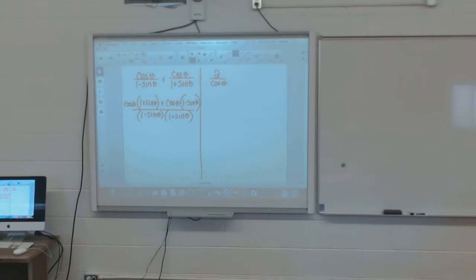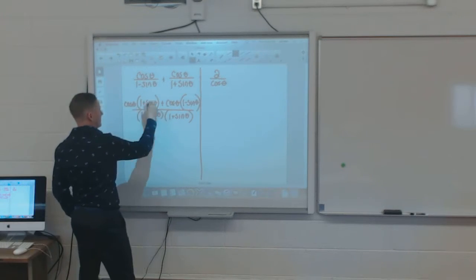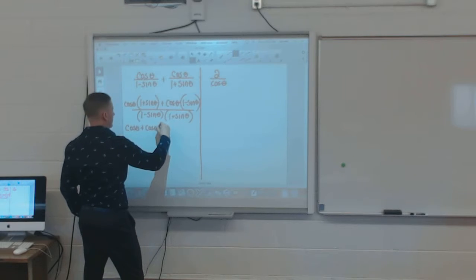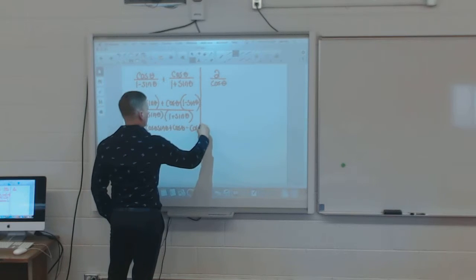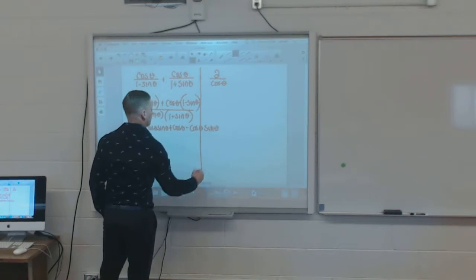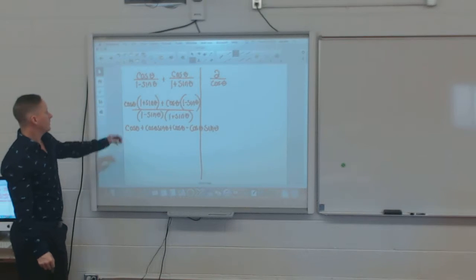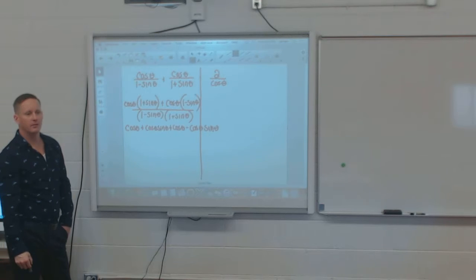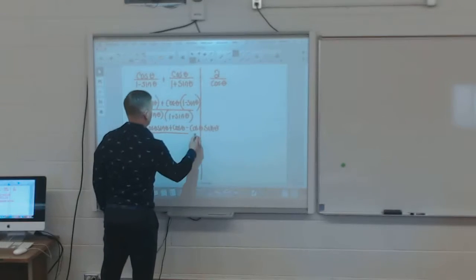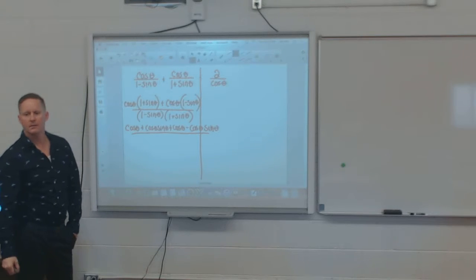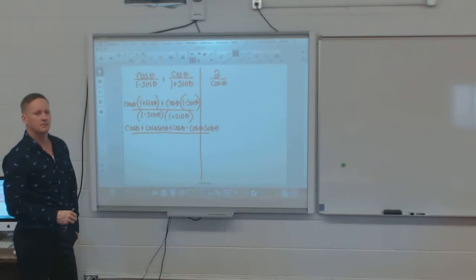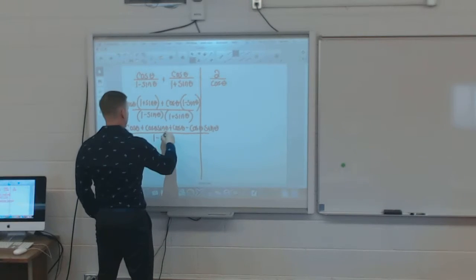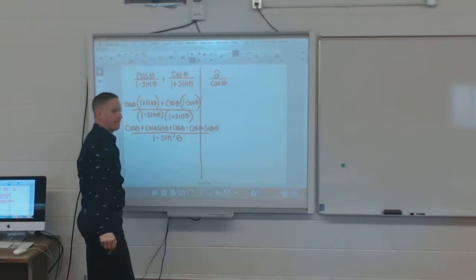All right, now. So, here's what I have. Multiply through: cos theta plus cos theta sine theta plus cos theta minus cos theta sine theta. So, I just multiply through your brackets. Anybody following what I'm doing so far? What's the bottom? Cos theta. Yeah, okay, not yet. If I multiply the bottom, what am I going to end up with? Well done, Jake. Yeah, that's important too.